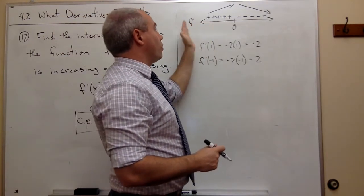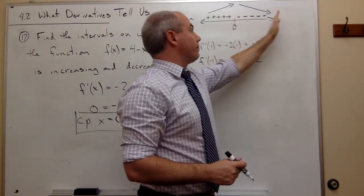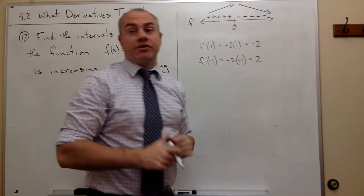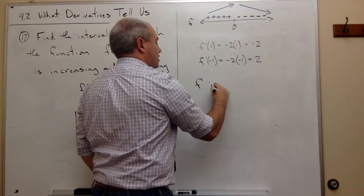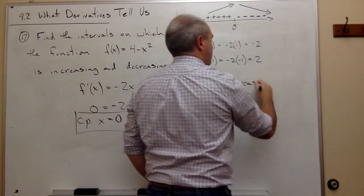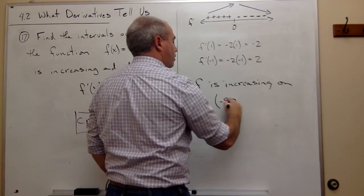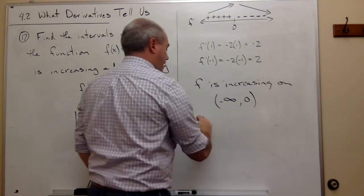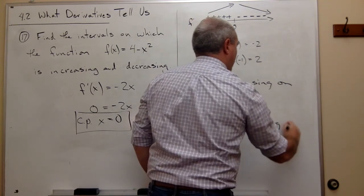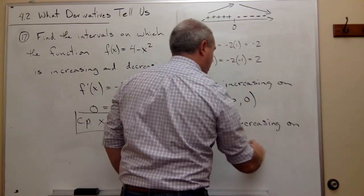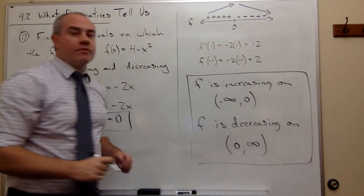So I know that on this whole interval from negative infinity to 0, this function is increasing. And from 0 to positive infinity, this function is decreasing. So f is increasing on the interval from negative infinity to 0. And f is decreasing on the interval from 0 to positive infinity. And that's my answer.